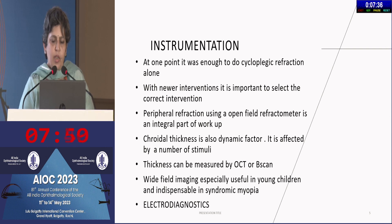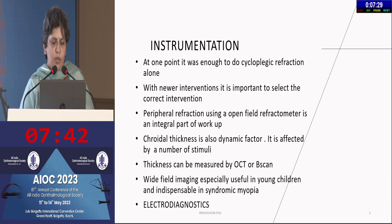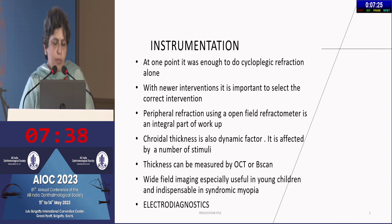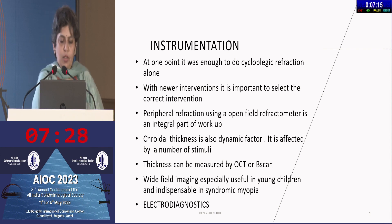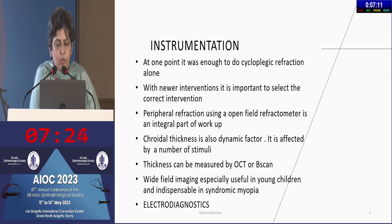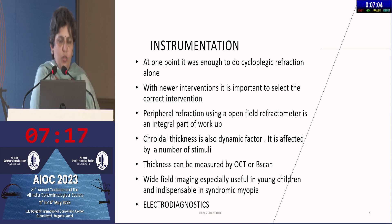Choroidal thickness is also a dynamic factor affected by a number of variables. At this point there isn't enough data on how to choose myopia intervention based on OCT or choroidal thickness, but this is in the pipeline and more data will likely be available in a few years. Thickness can be measured with OCT or with a B-scan. Wide field imaging is especially useful in younger children and indispensable if you are looking at syndromic or very high myopia.